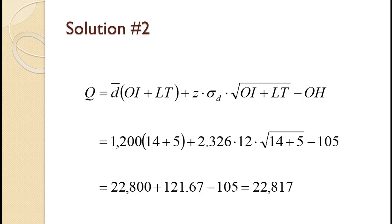The protection period is 14 plus 5 equals 19 days. The average daily demand of 1,200 times the protection period of 19 equals 22,800. A 99% service level generates a Z value of 2.326. That times the daily standard deviation of 12 times the square root of 19 gives a safety stock of 121.67. Combining these two values and subtracting the on-hand level of 105 gives an order quantity of 22,817.